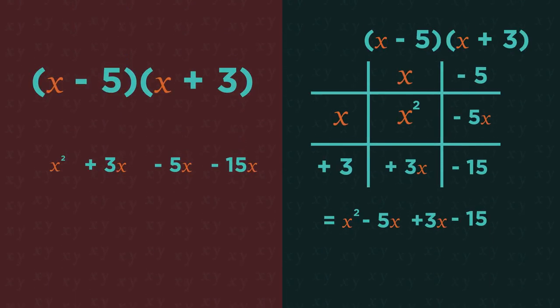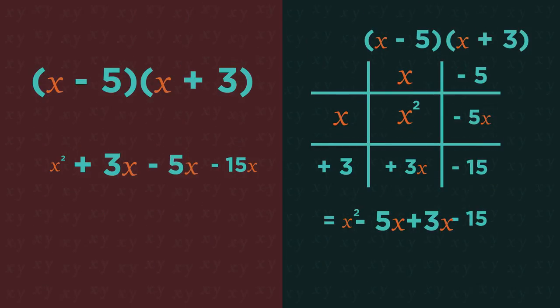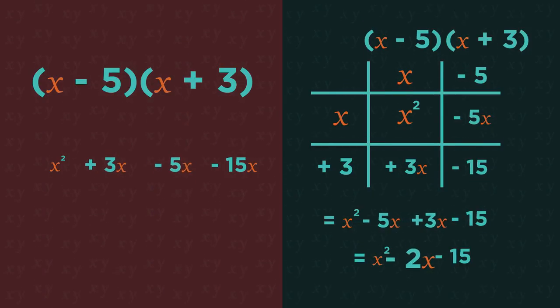For both methods, we then just need to simplify the middle terms by adding 3x and negative 5x to get negative 2x. So that's our final answer.